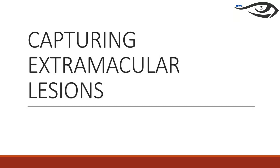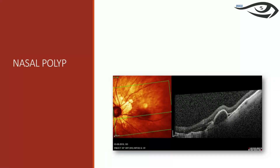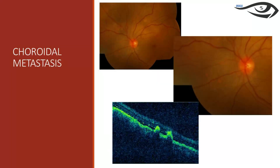OCT can also be used to capture lesions not in the macular region — you can place the macular cube over any area of interest. For example, a retinal detachment inferior to the disc, a nasal polyp, or choroidal metastases from breast cancer can all be imaged by centering the cube on those areas.